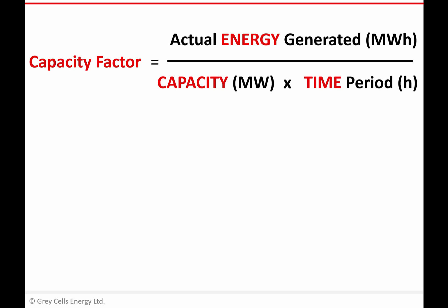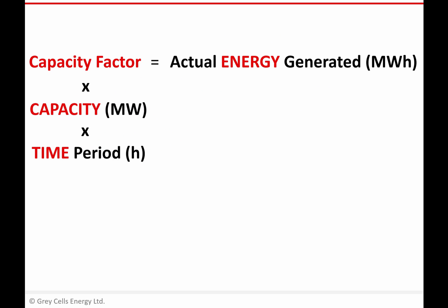That's all very interesting, but what's useful about this relationship is to be able to play around with different numbers and rearrange it to calculate different things. So for example, I can rearrange that equation so it looks like this. I basically move capacity and time from the bottom of the right hand side to the top of the left hand side. And now what that means is if I know my capacity factor or I can make some assumption about my capacity factor, I can use that to calculate how much energy I'm going to generate from a power plant of a certain capacity over a certain period of time.